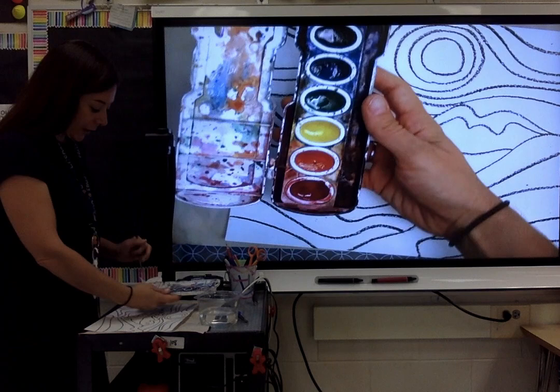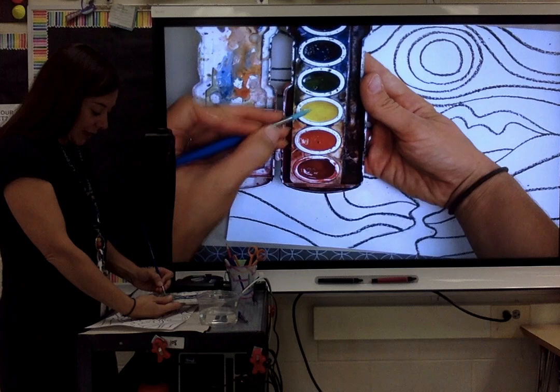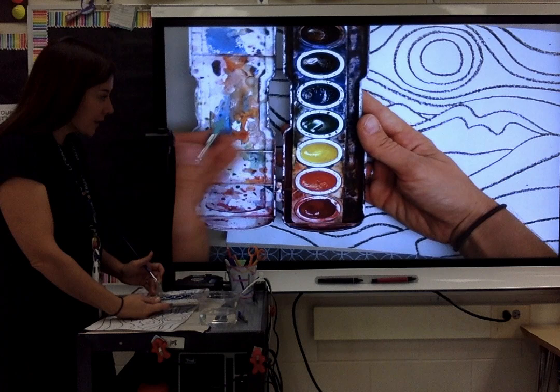One thing you'll notice on a basic watercolor paint set is that the warm colors are all right next to each other: red, orange, and yellow. And you've got all the cool colors right next to each other which is green, blue, and purple.